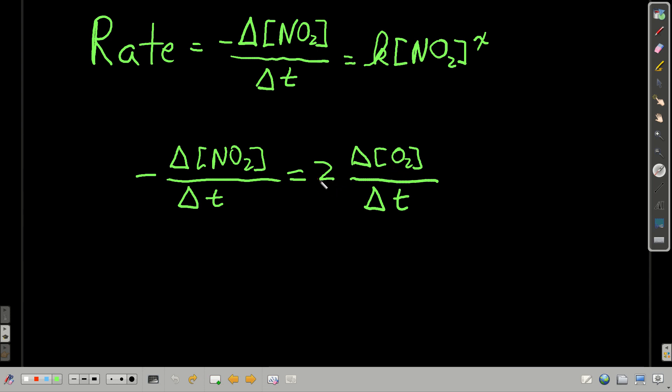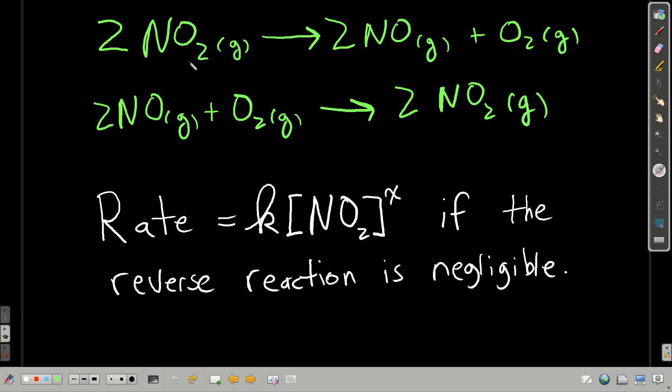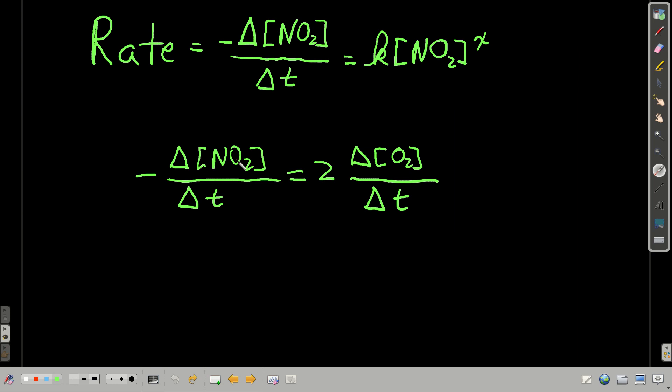But we could also, we did in the last module, write the rate as the change in concentration of a product that's formed, say oxygen. But because the balanced equation, we can see that two nitrogen dioxide dissociate for every one oxygen that forms, we know that the change in concentration of nitrogen dioxide over time will be twice that of the change in concentration of oxygen.